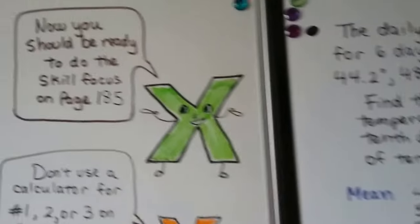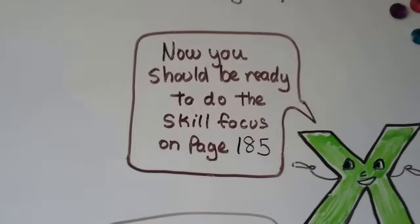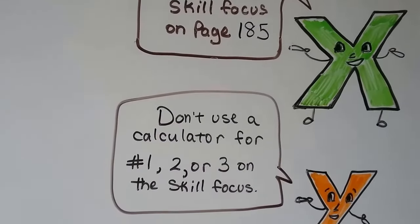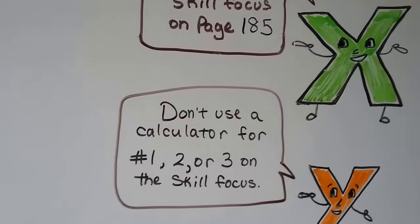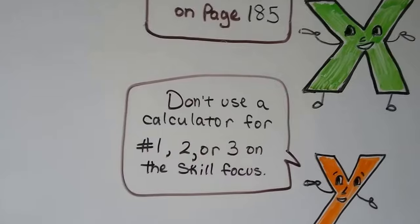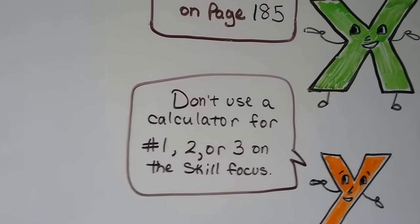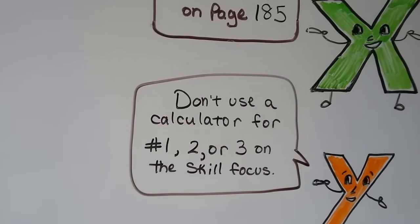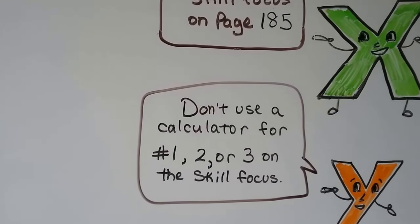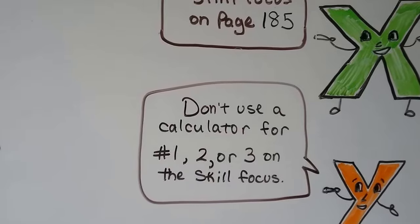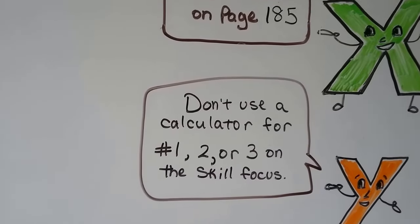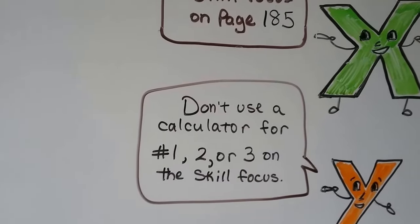So now you should be ready to do the skill focus on page 185. And it says, don't use a calculator for numbers one, two, or three on that skill focus. And you want to stick to that because this skill focus is kind of like a make pretend GED test. You want to do the skill focus just the way the test would say to do it. So if they don't allow calculators for some of these problems, you want to try it without a calculator. See if you can do it. If you have some trouble, go back and watch the video again.